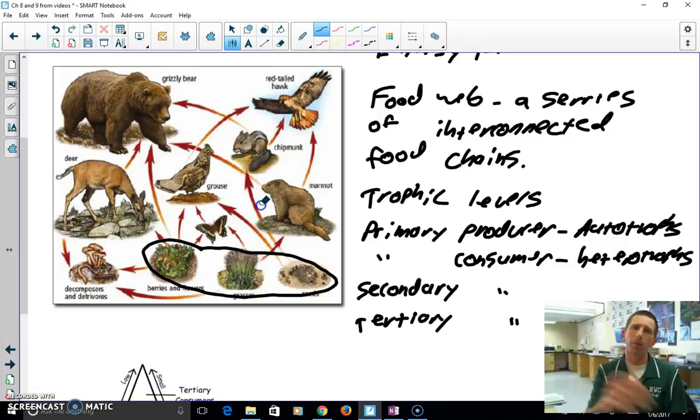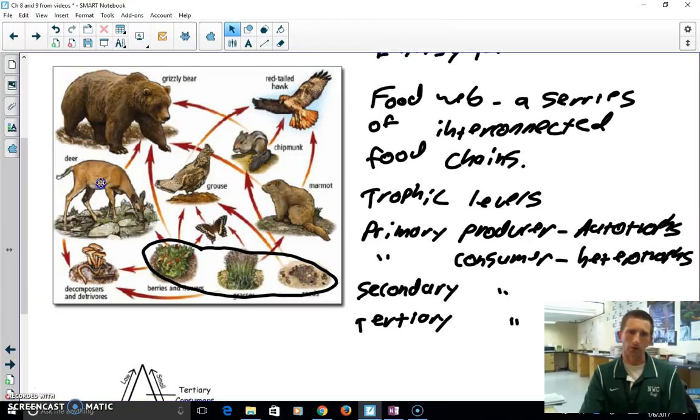And we could even go all the way back to elementary again, and we could say that our primary consumers are herbivores because they just eat plants. So a deer is a herbivore. We could say that the secondary consumers, some of them could be omnivores. So like the grizzly bear eats the deer, but the grizzly bear also eats the berries and flowers. So they eat meat, they also eat vegetables.